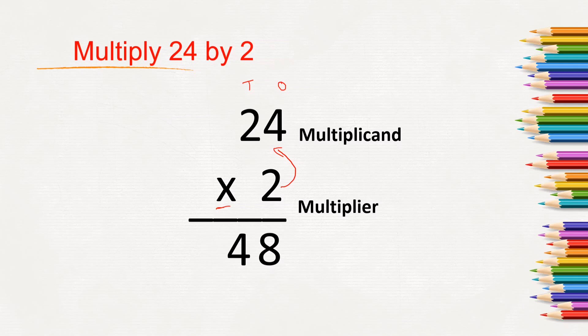When we multiply 2 numbers, the answer what we get is called as product. So here we have multiplied 24 by 2 and got the answer as 48. Instead of adding 24 two times, we have multiplied by 2. So multiplication is nothing but repeated addition.